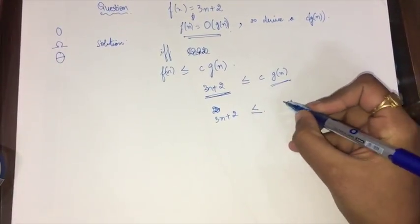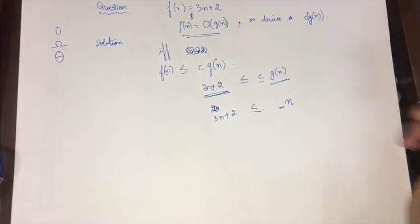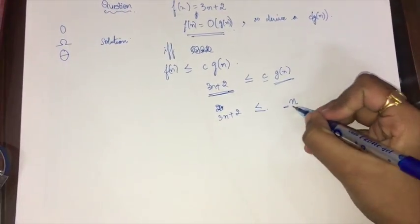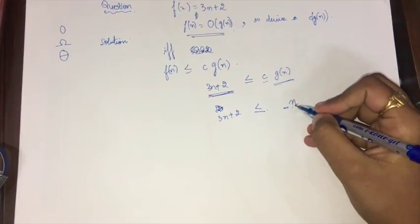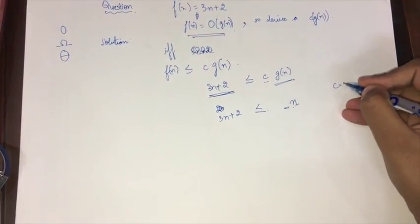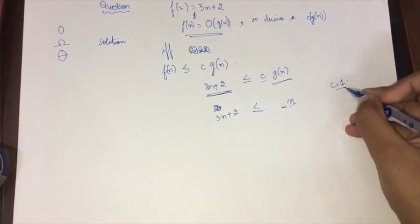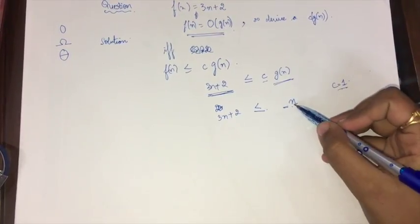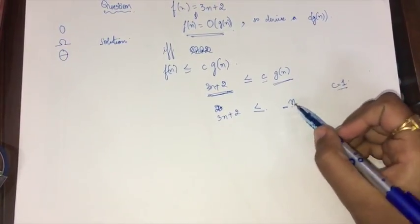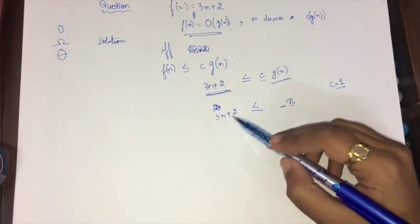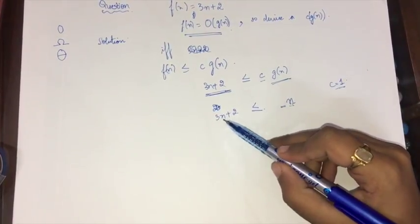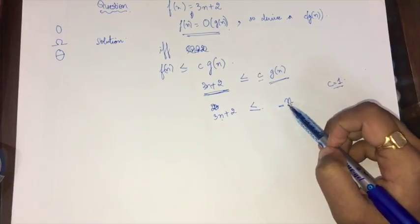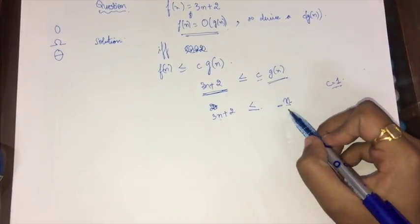Now I have to determine the value of the constant c. I'll check for c = 1. Suppose n = 1: 3×1 + 2 = 5, and c·n = 1×1 = 1. Is 5 ≤ 1? No — false. So c = 1 does not work.